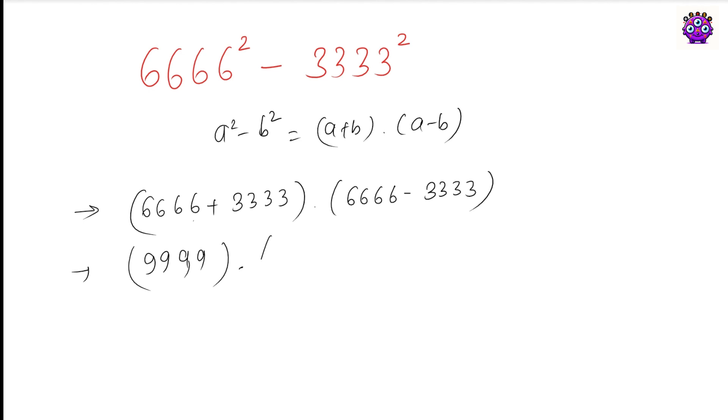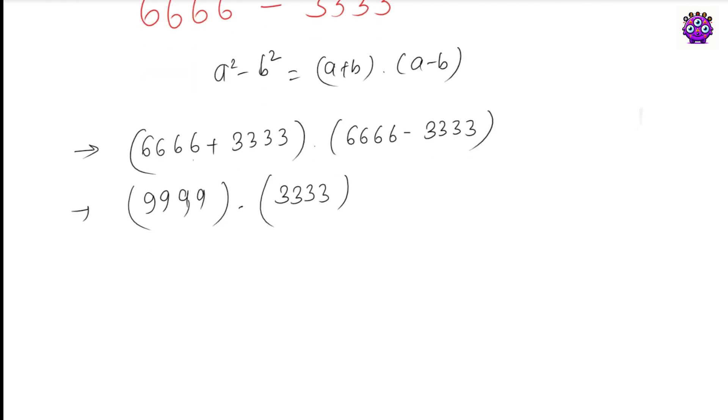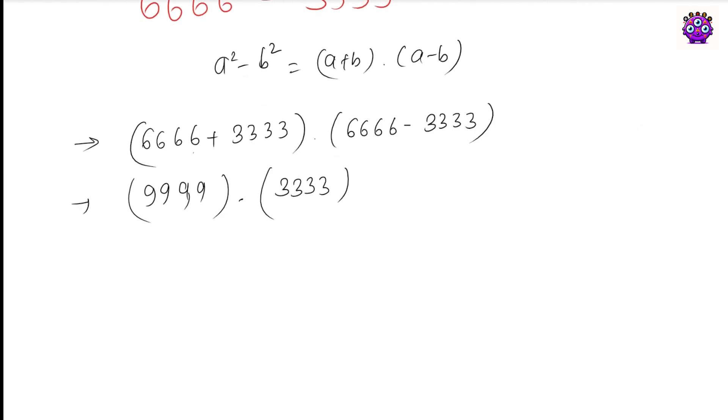And if you subtract this term, it becomes 3333. This term 9999 can be written as 10000 minus 1. If you subtract, you get this term times 3333.